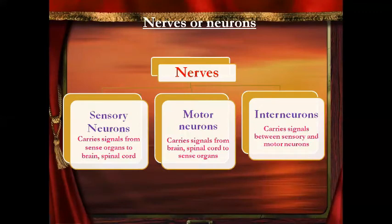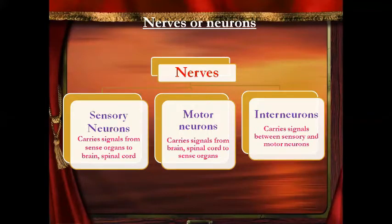Nerves or neurons are usually of three types: sensory neurons, motor neurons, and interneurons. Sensory neurons carry the signals from the sense organs to the brain and spinal cord. Motor neurons carry the signals or messages from the brain and spinal cord to the sense organs. Interneurons are the neurons which transfer messages between the sensory and the motor neurons.